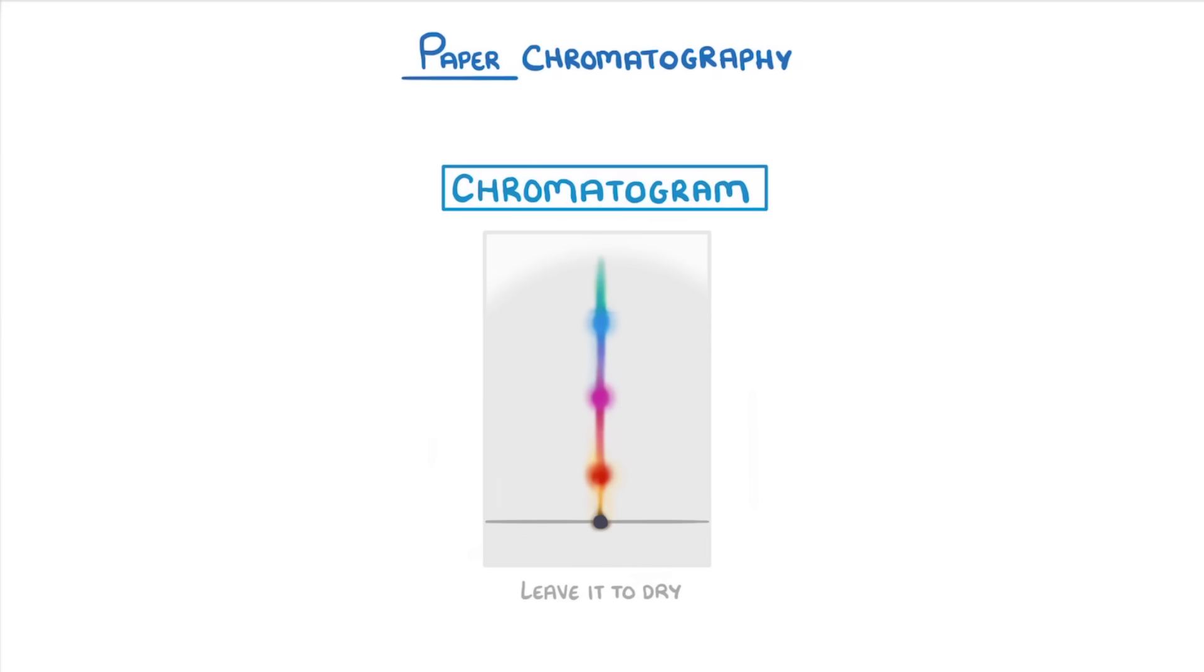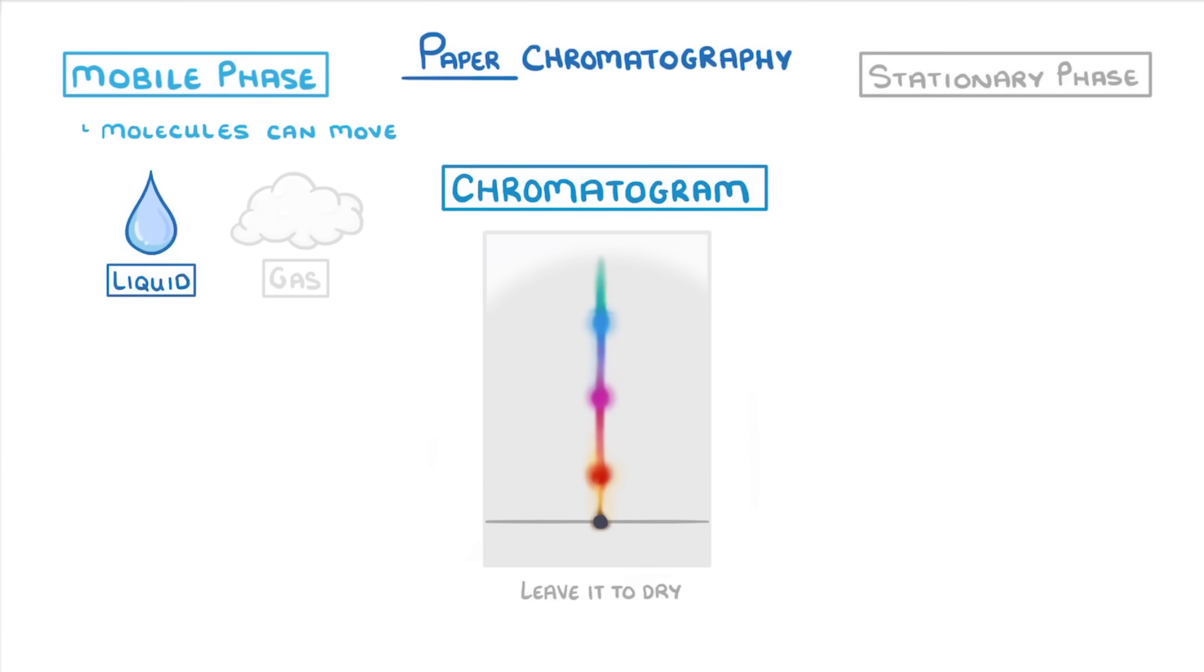Now, to explain why the different chemicals move up the filter paper at different rates, you need to use a couple of weird terms: the mobile phase and the stationary phase. What makes these things odd is you don't want to think of these phases as periods of time, but rather as types of substances. The mobile phase is the substance that the molecules can move in. It's always a liquid or a gas. And in our paper chromatography, it would be the solvent that we used.